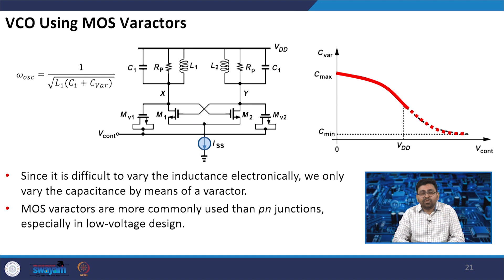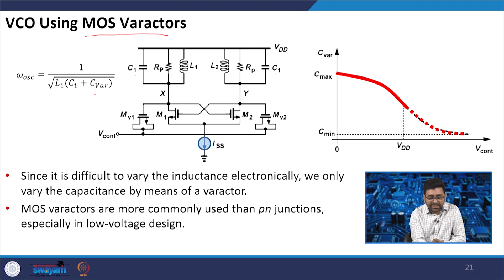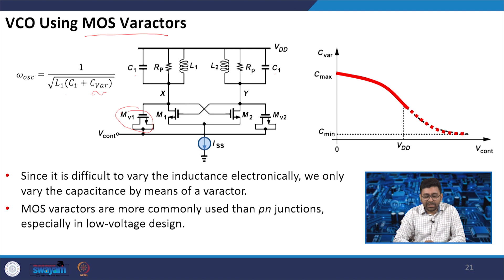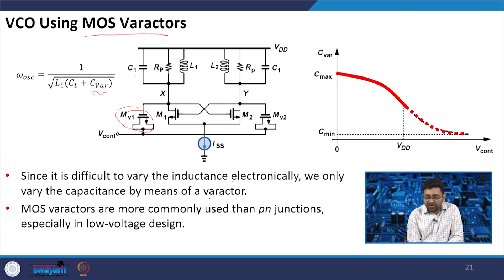For the VCO, we can use a MOS varactor to change the capacitance. There is already a fixed capacitor C1 setting the base oscillation frequency, and the variable capacitance C_variable is added using a MOS variable capacitor. The drain and source of the MOS varactor are connected to V_control, and the gate is connected to the oscillator node.